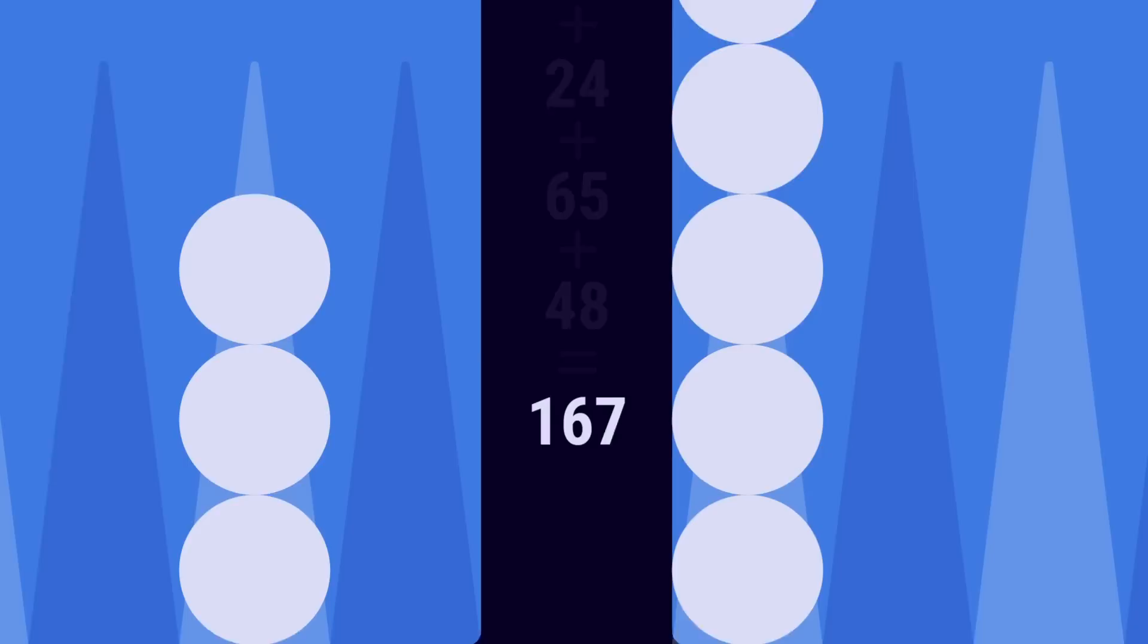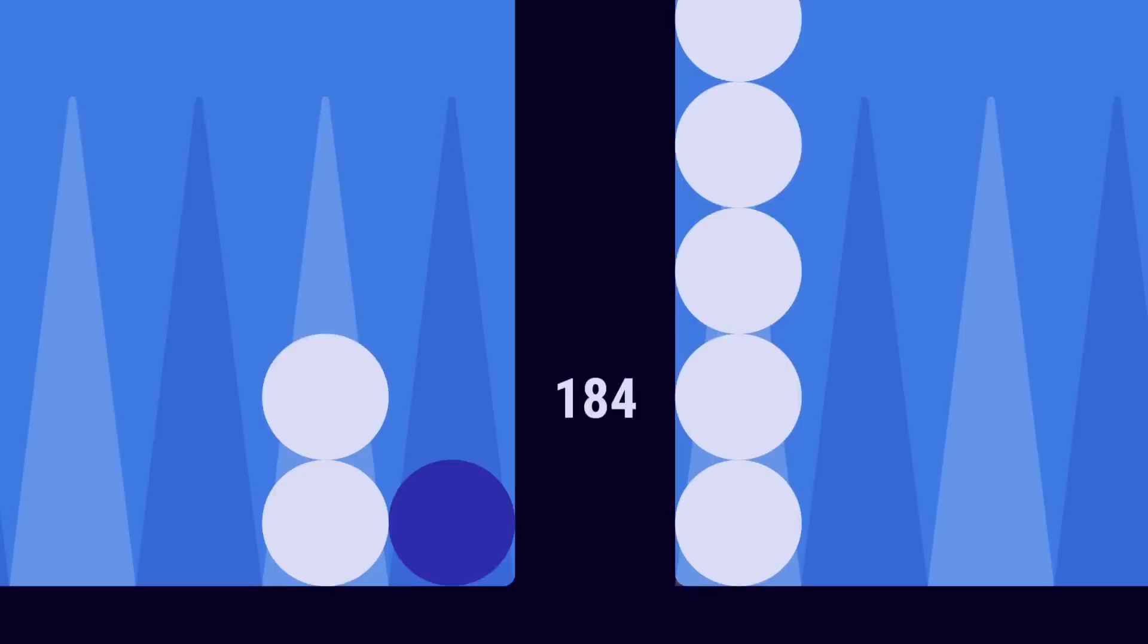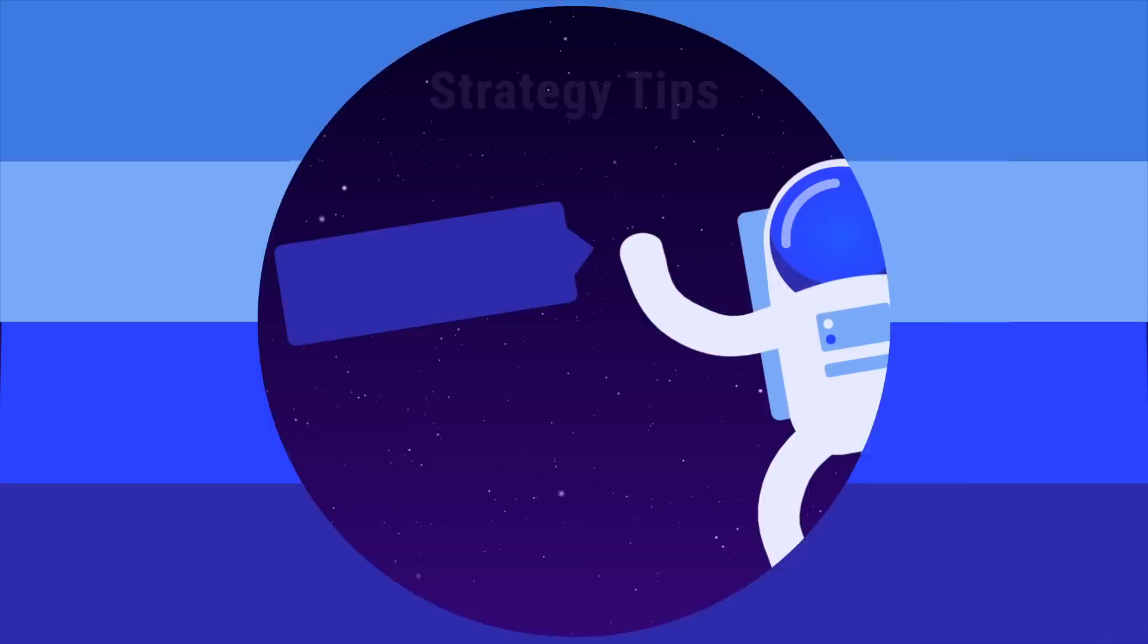When a checker moves forward, the pip count decreases. When a checker is hit, the pip count increases. The player with the lowest pip count is ahead in the race. The pip count determines the optimal strategy to use in the game.